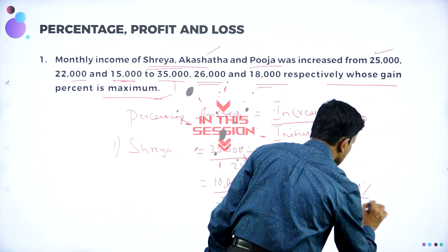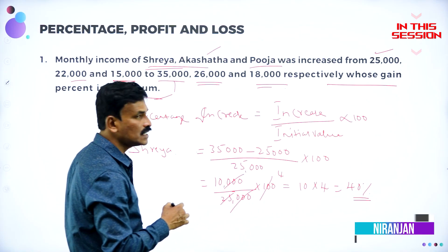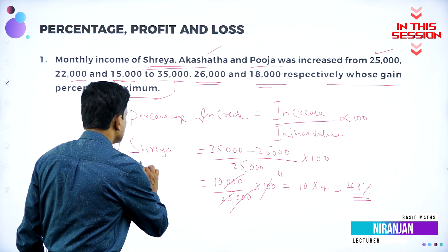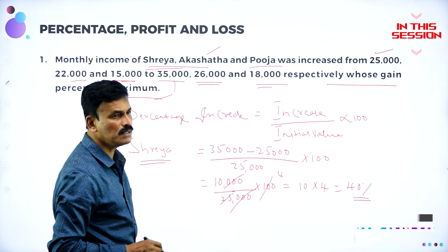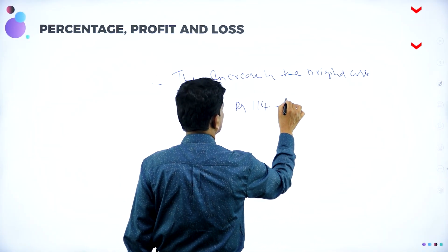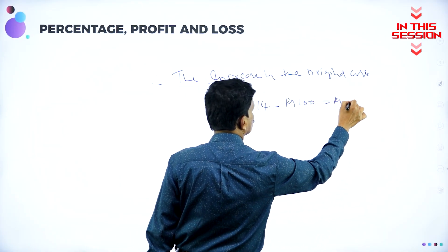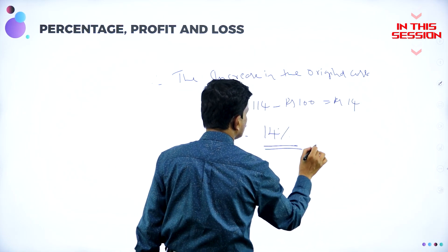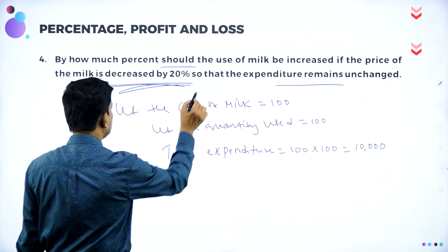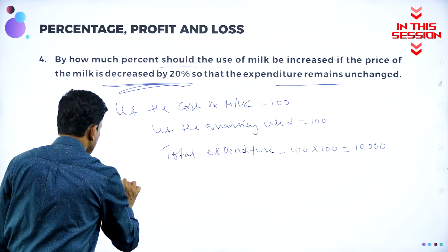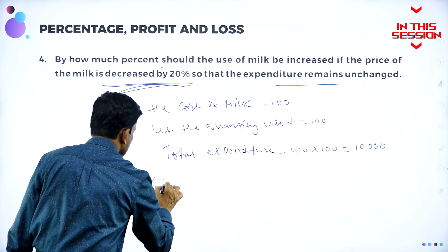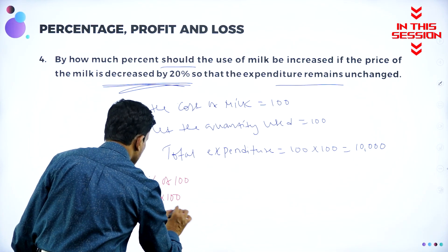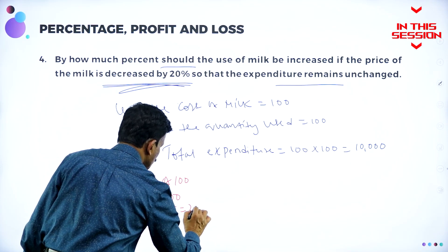40 percent is the increase in the salary — the income of Shreya. So the percentage increase in Shreya is 40 percent. 114 minus 100 is equal to rupees 14, that means the increase is 14 percent. Now 20 percent of 100 is equal to 20 into 100 divided by 100, that is nothing but 20 itself.